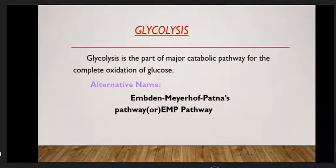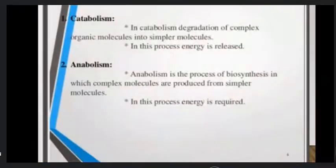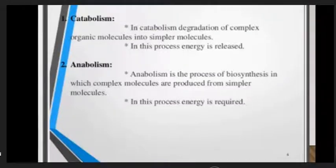Glycolysis plays a major part in the catabolic pathway for complete oxidation of glucose. Glycolysis alternative name is the Embden-Meyerhof-Parnas pathway, or EMP pathway. Catabolism is the degradation of complex organic molecules into smaller molecules. Anabolism is the process of biosynthesis in which complex molecules are produced from simpler molecules. Catabolism releases energy; anabolism requires energy.